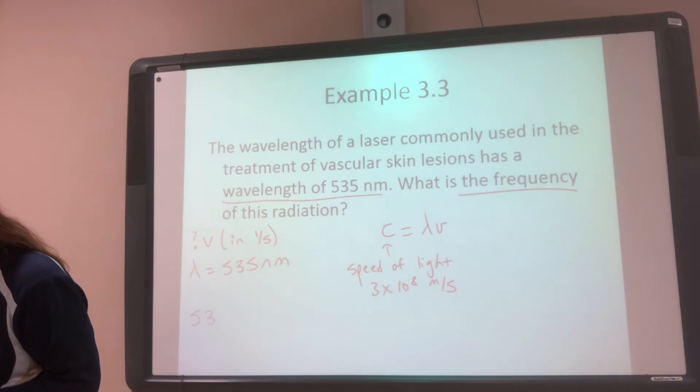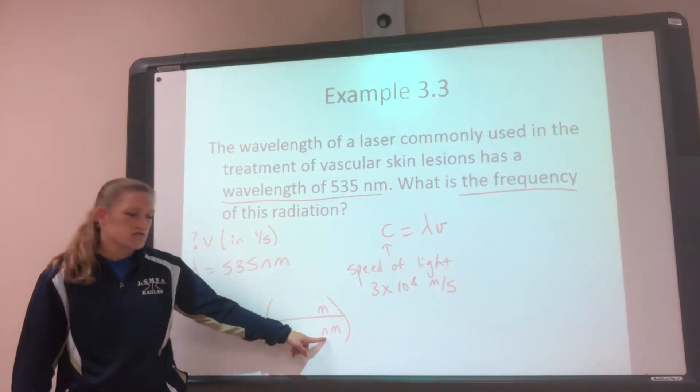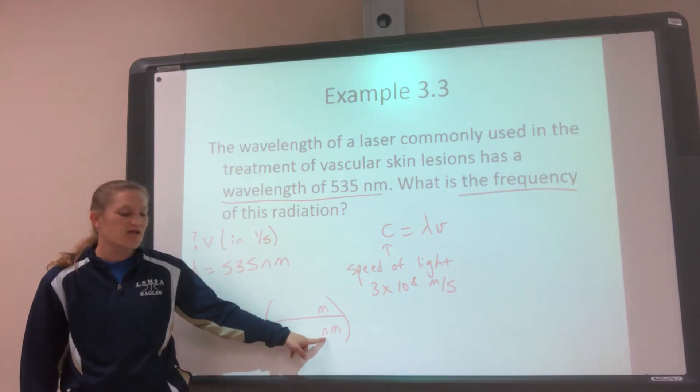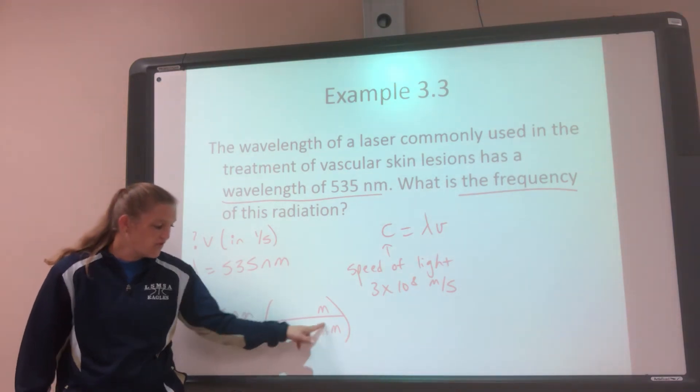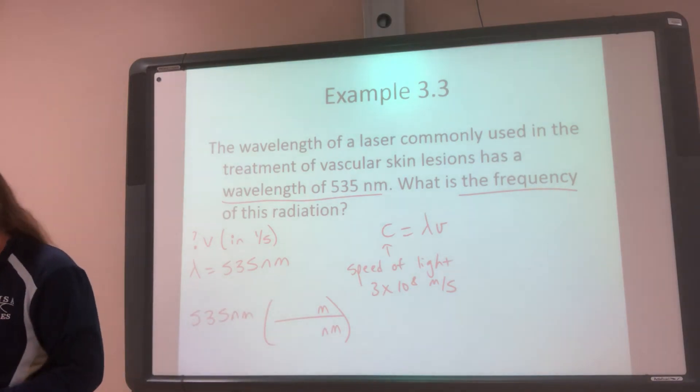I have 535 nanometers. I need nanometers to go away so it goes on the bottom, and I'm trying to get meters. So then I need to say, what does nano stand for? Nano stands for 10 to the negative 9. Since the prefix is here, it goes on the other side, on the top. Nanometers cancel and I get meters. So you can just write 535 times 10 to the negative 9 meters.